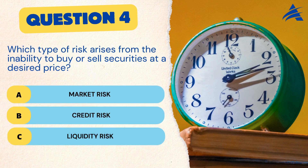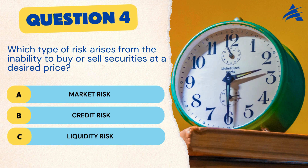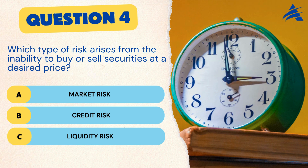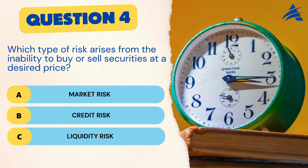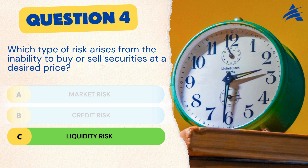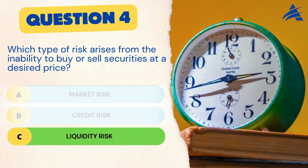Question 4. Which type of risk arises from the inability to buy or sell securities at a desired price? A. Market risk. B. Credit risk. C. Liquidity risk. The correct answer is C. Liquidity risk. Liquidity risk underscores the importance of having investments that can be easily converted into cash without significantly impacting their value.